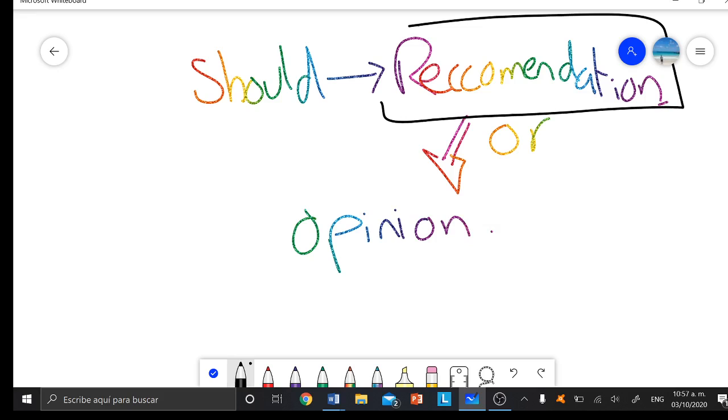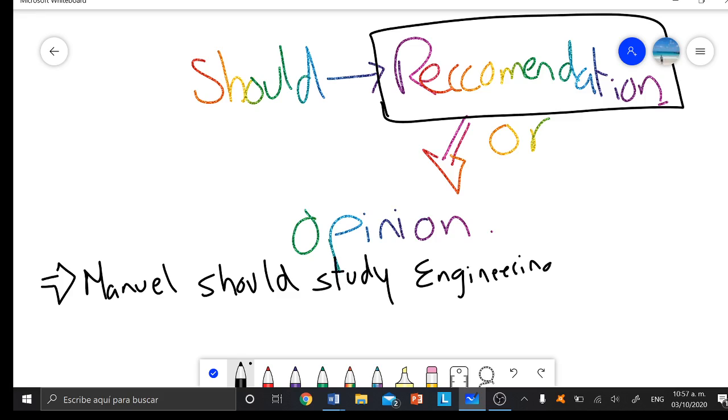We normally use it to give a recommendation or to express an opinion. First of all, I'm gonna tell you an example of a recommendation. This will be an example: Manuel should study engineering because he is really good at math.